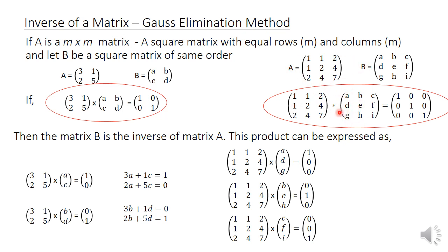This product expression can be expressed as two separate systems of equations. The matrix A multiplied by the first column of the inverse matrix must equal the first column of the identity matrix, resulting in two equations involving unknowns a and c. Similarly, A multiplied by the second column of the inverse matrix must equal the second column of the identity matrix, giving two equations with unknowns b and d.